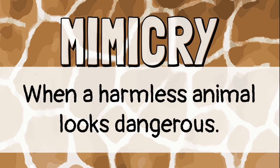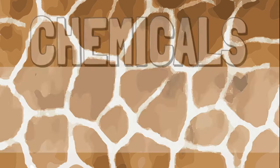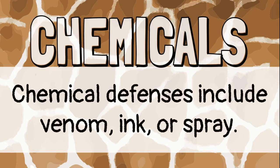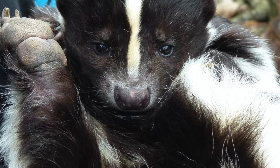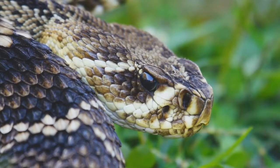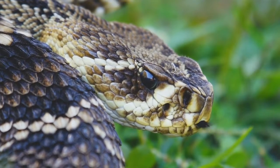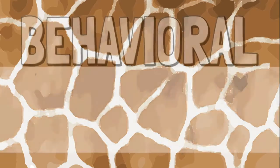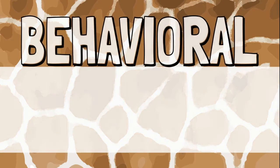Mimicry is when a harmless animal looks like a dangerous animal to trick predators into leaving it alone. Finally, some animals have chemical defenses for protection. A skunk squirting foul-smelling liquid and a snake's venom are examples of chemical defenses.